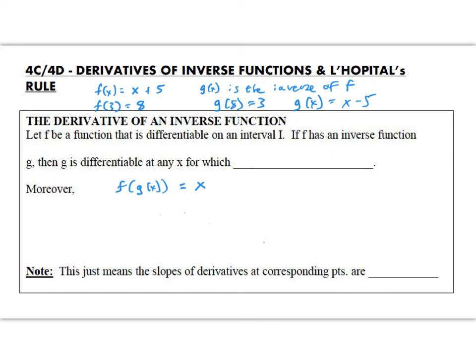We're going to let f be a function that's differentiable on some interval I, and f has an inverse function g. G is differentiable at any x for which f prime is not 0. Moreover, f of g of x equals x. This is a true mathematical definition of an inverse, not any of this flipping it over the y equals x on the graph or switching out the x and y.